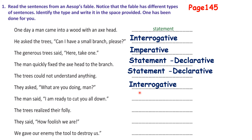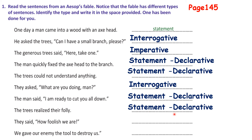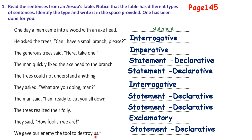'They asked, what are you doing, man?' — there is a question mark, so this is interrogative. 'The man said, I am ready to cut you all down' — he is giving information, so declarative. 'The trees realized their folly' — folly means mistake — also declarative. 'They said, how foolish we are!' — exclamation mark, so this is exclamatory. 'We gave our enemy the tool to destroy us' — just information, so declarative. Now pause the video and copy down.